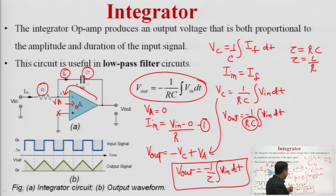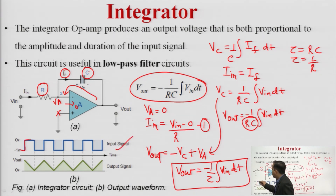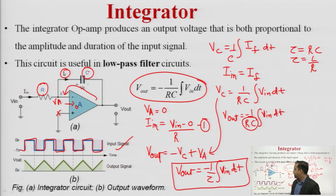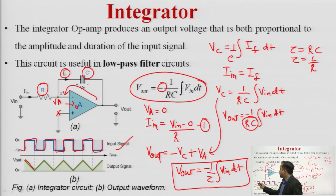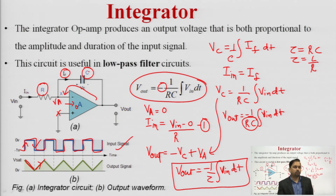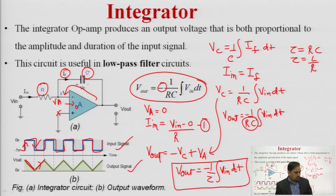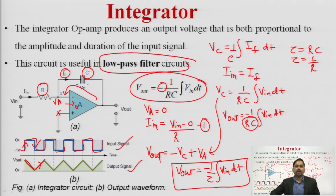If a rectangular square pulse is provided as input, the integration of a step signal produces a ramp signal, but with a negative sign — so when the step goes upward the ramp goes downward, and vice versa. These are the input and output signals. Integrators are also used in filter circuits, where this integrator acts as a low-pass filter.